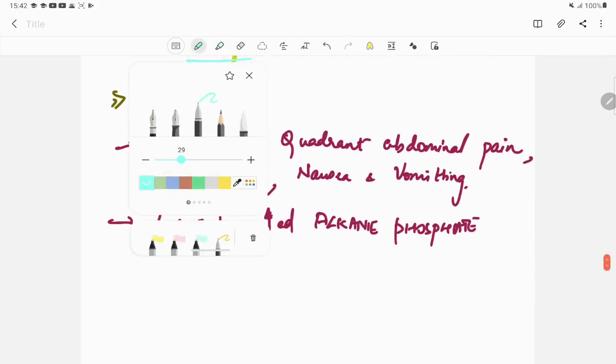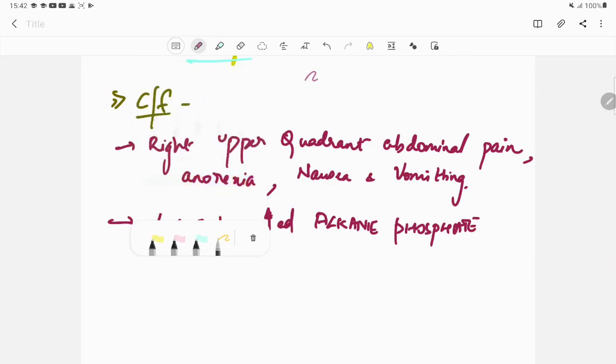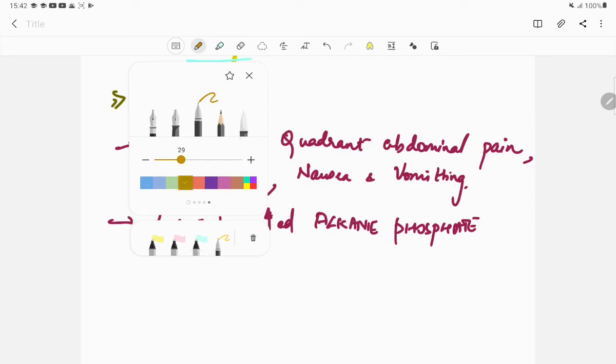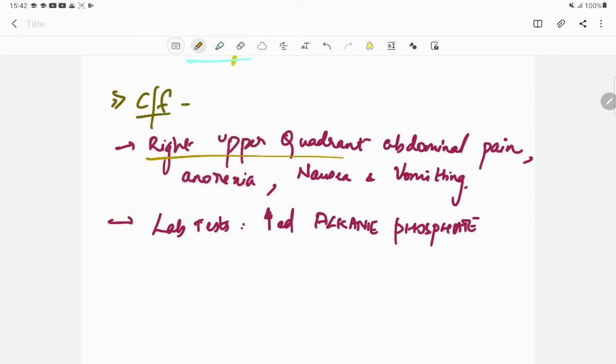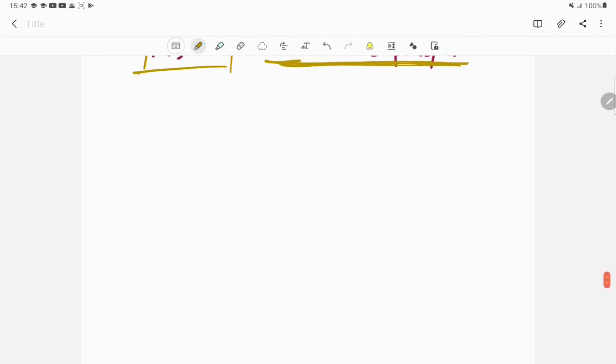Lastly, the clinical features of gallbladder carcinoma: the clinical features include pain in the right upper quadrant, anorexia, nausea, and vomiting. In the lab test, there is increased levels of alkaline phosphatase enzyme. So this is all about gallbladder carcinoma.